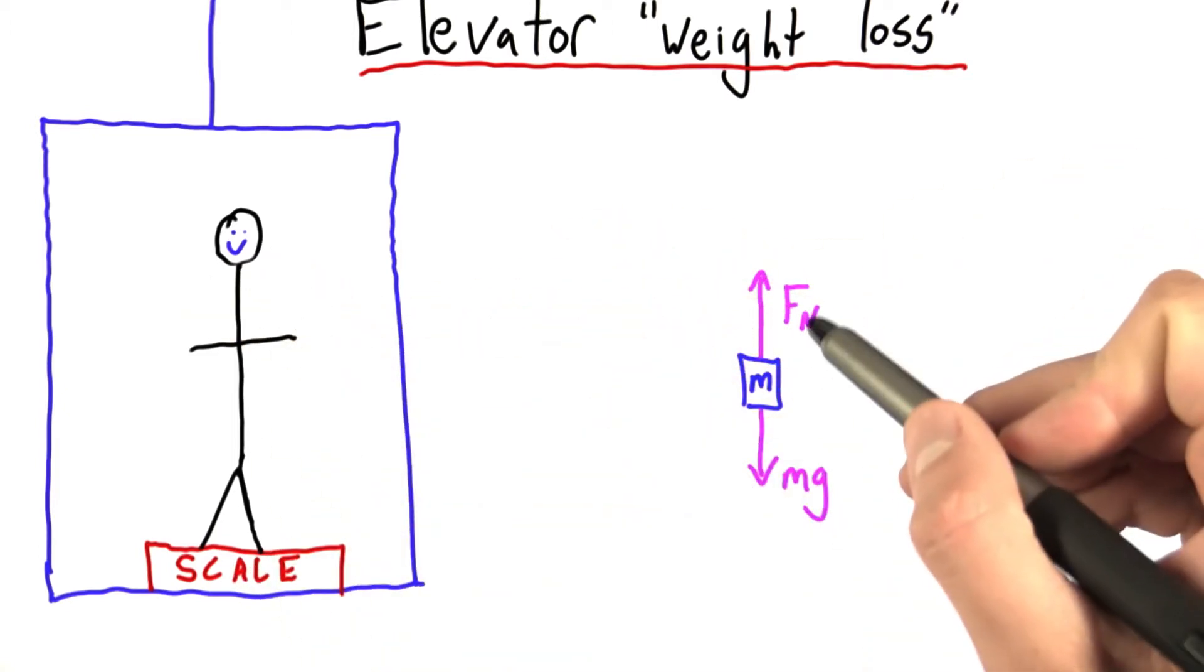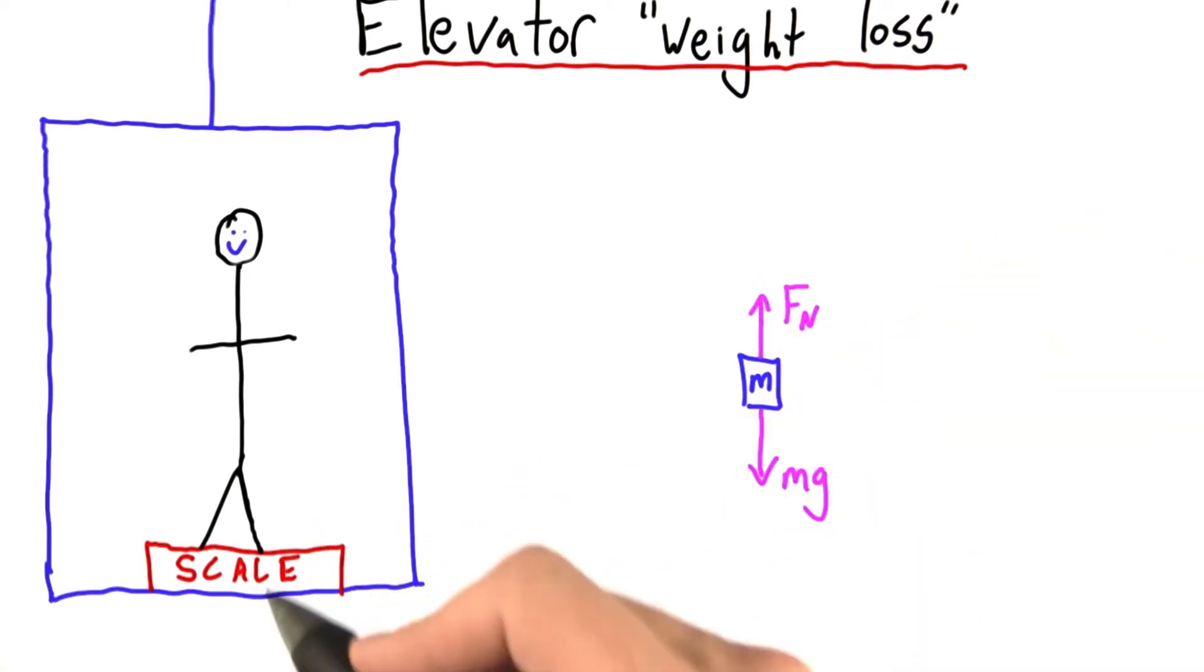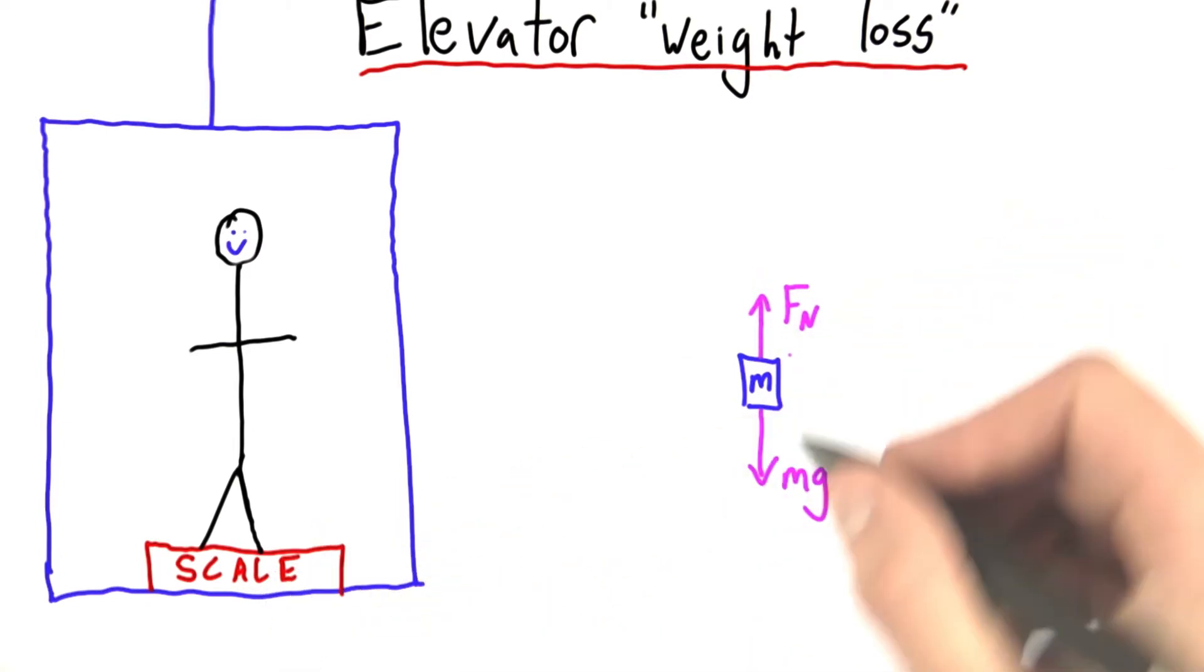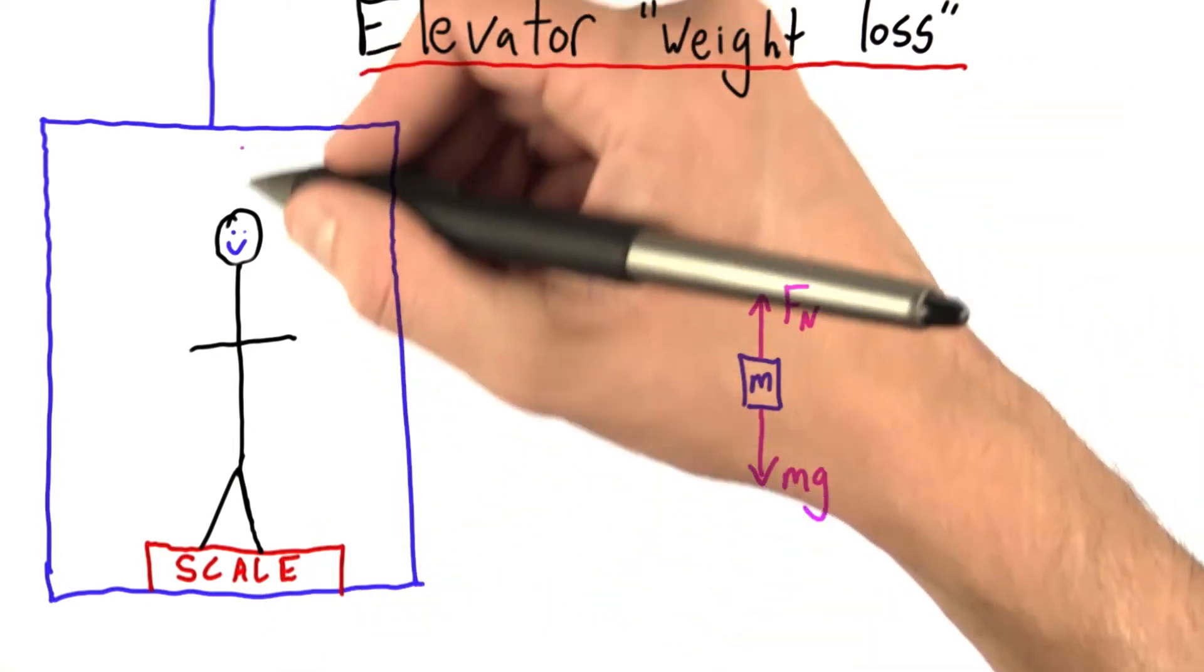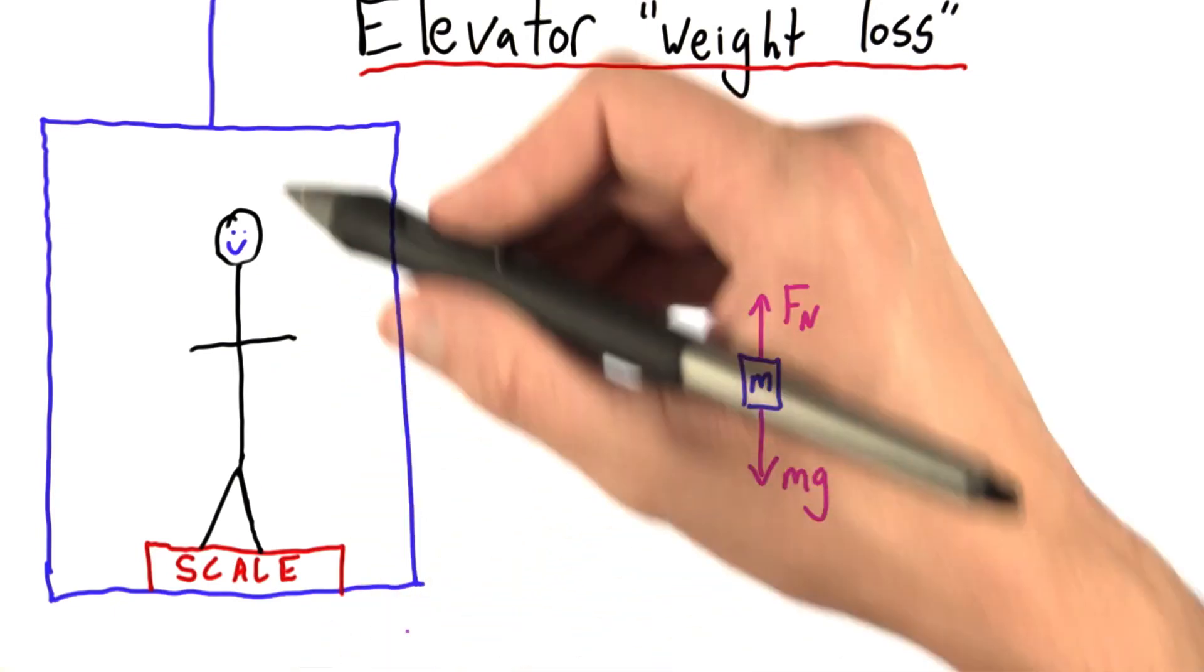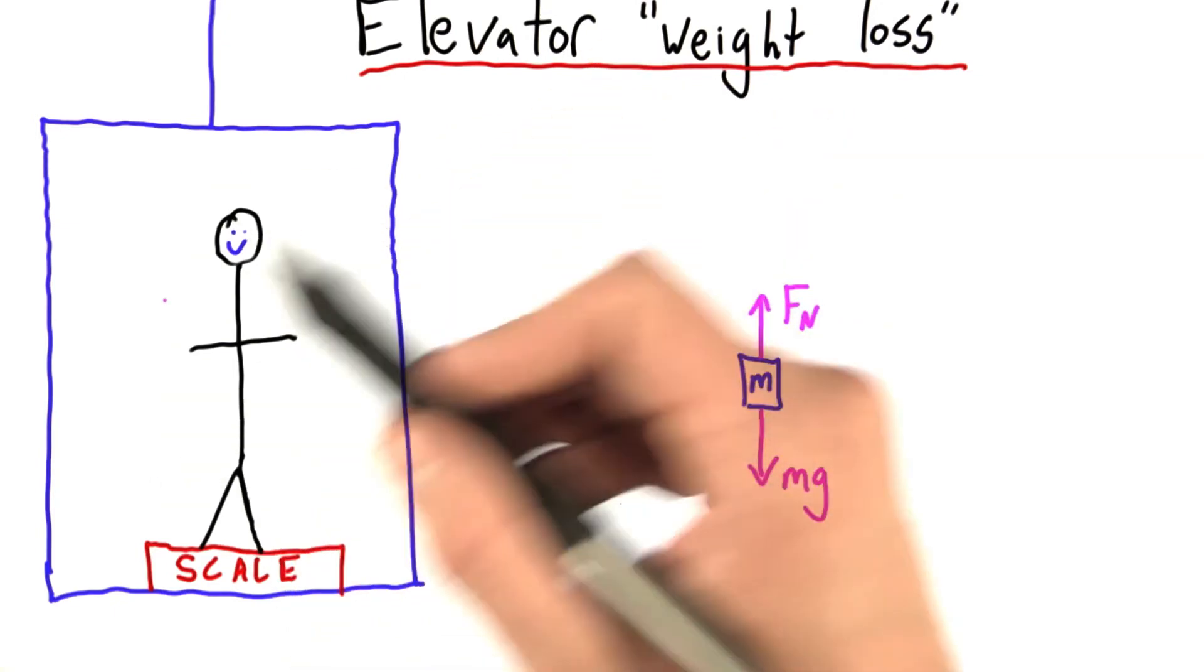So this man's realized that if he can just reduce Fn, then he can reduce his perceived weight. Of course, this will lead to unbalanced forces, meaning he'll have to accelerate downwards. In order to accelerate downwards, he's going to need an elevator.